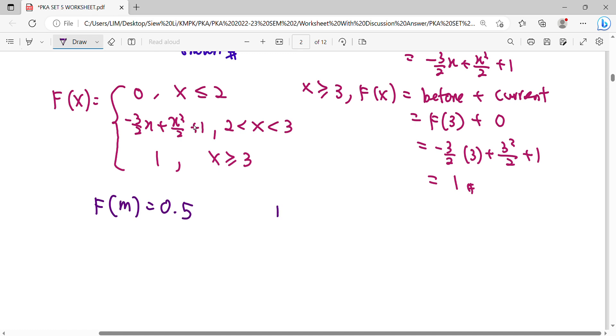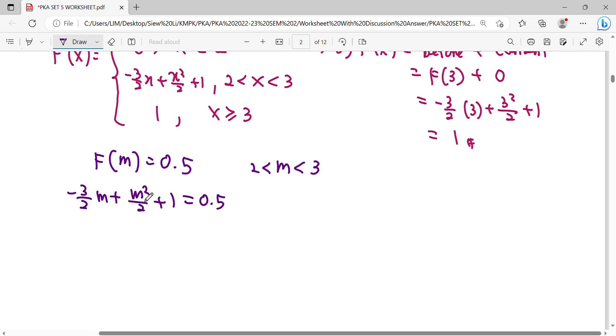Using F besar means F-m equal to 0.5. Where is your media allocate? Dia akan berlaku di tengah-tengah sini. So our median happened in the interval 2 and 3. So we substitute the median value M. Okay, so for this quadratic we simplify.